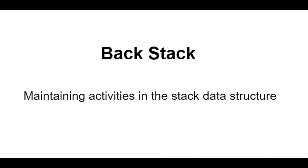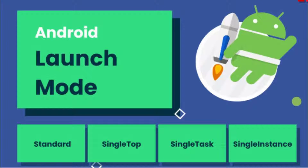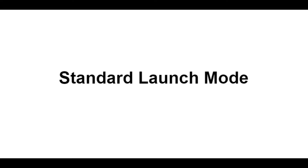Now let's discuss what is a launch mode and what are the different types. A launch mode is an Android OS command that determines how the activity should be started. There are four launch modes in Android: the first is Standard, the second is Single Top, the third is Single Task, and the last is Single Instance.